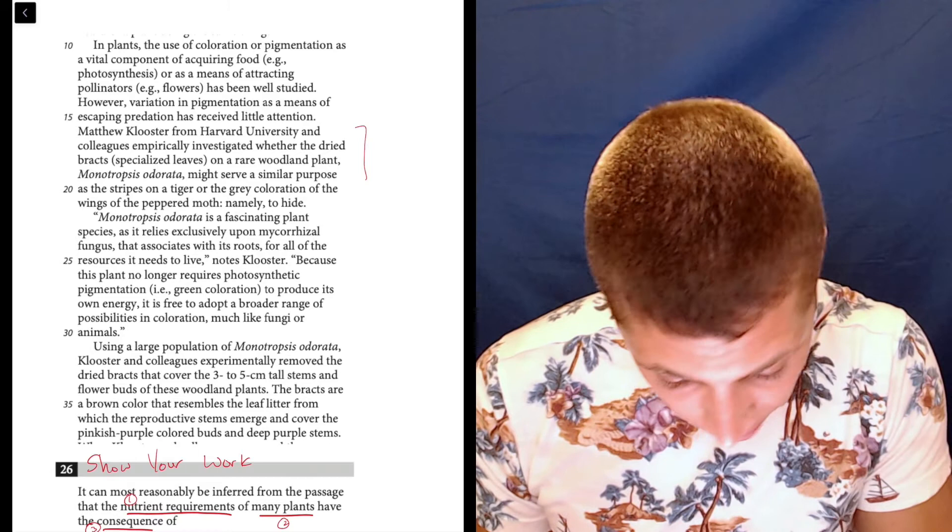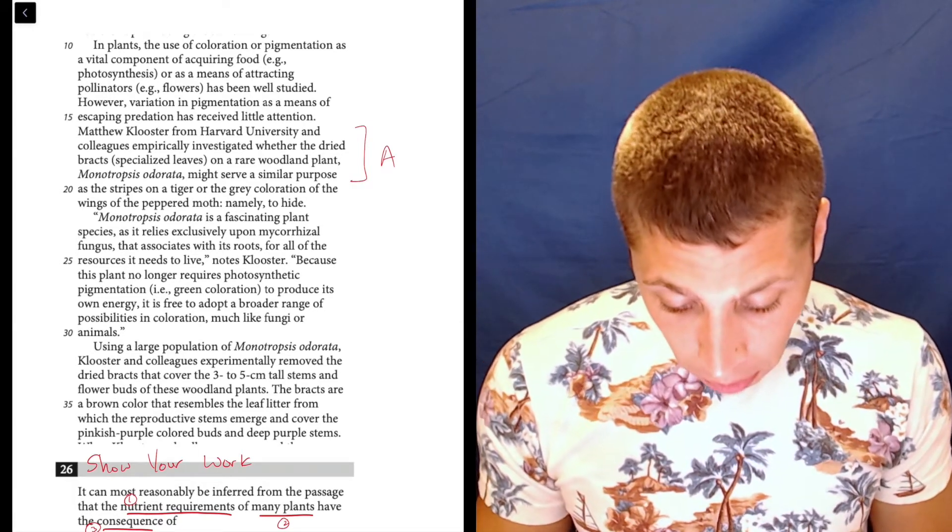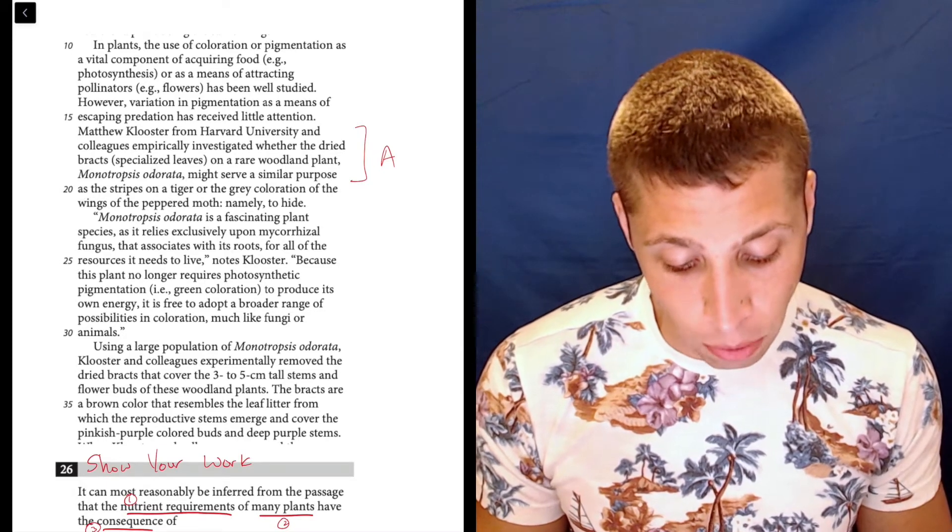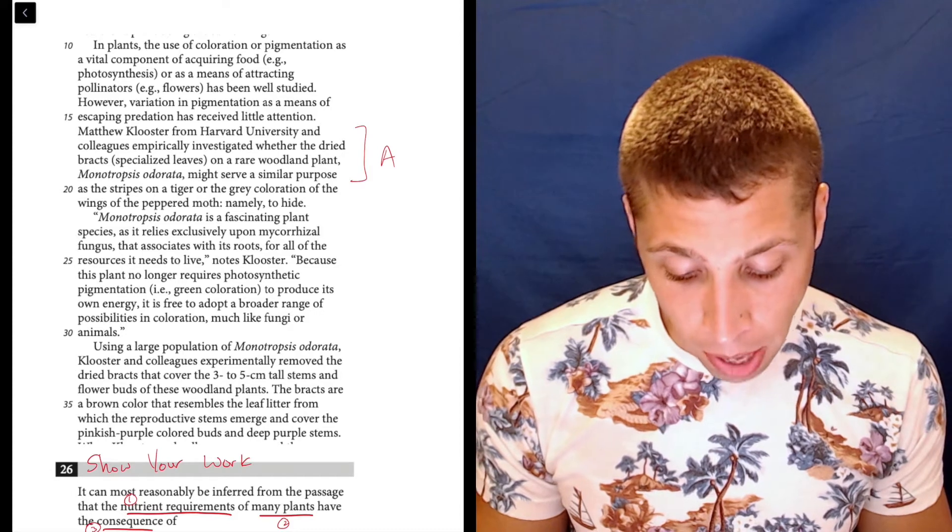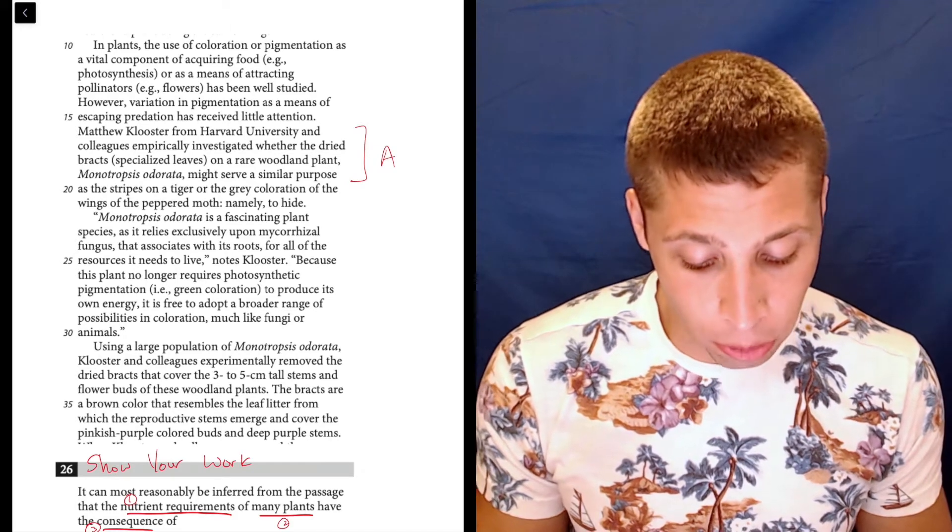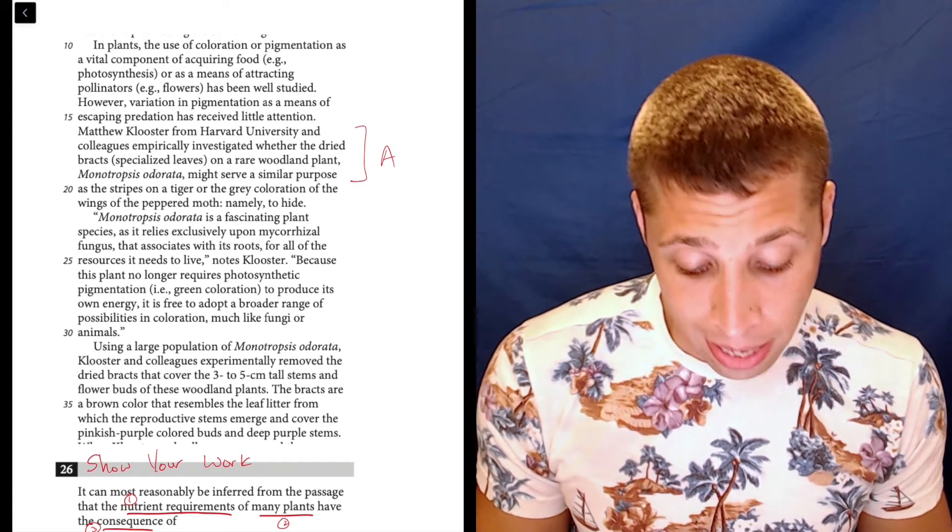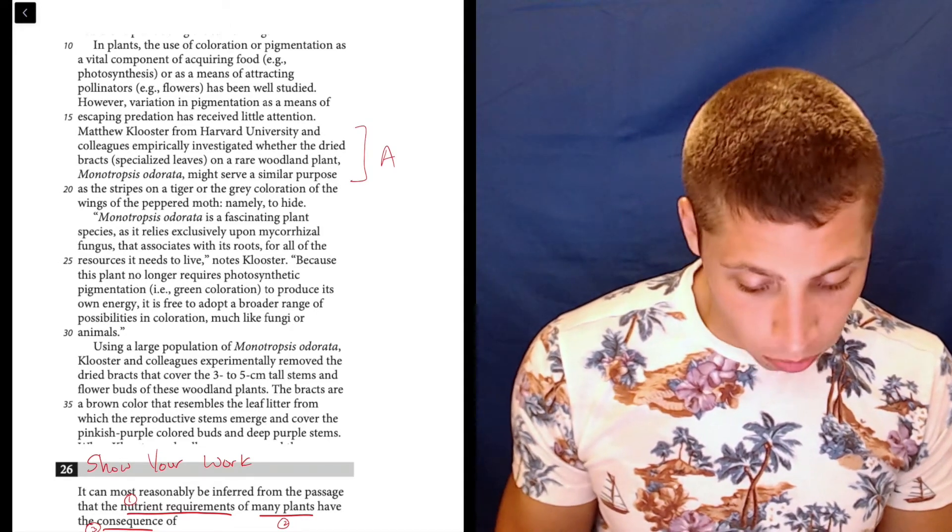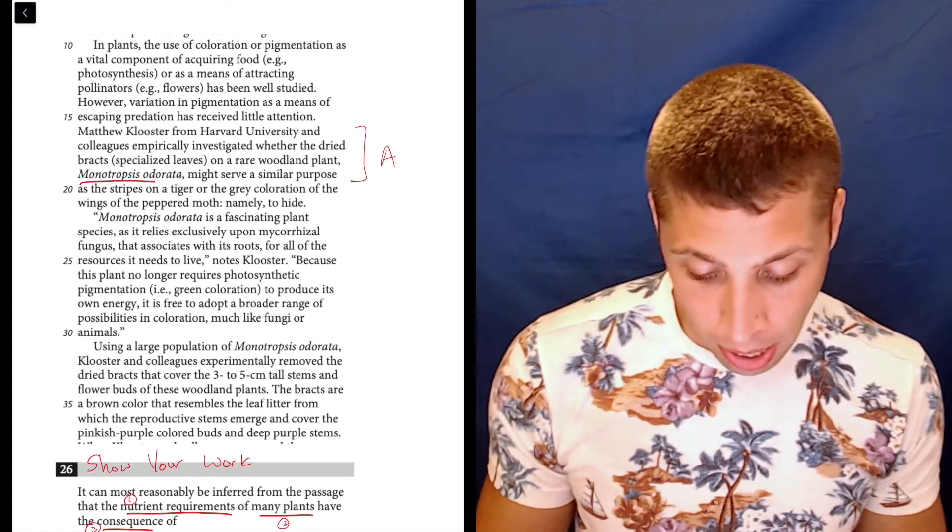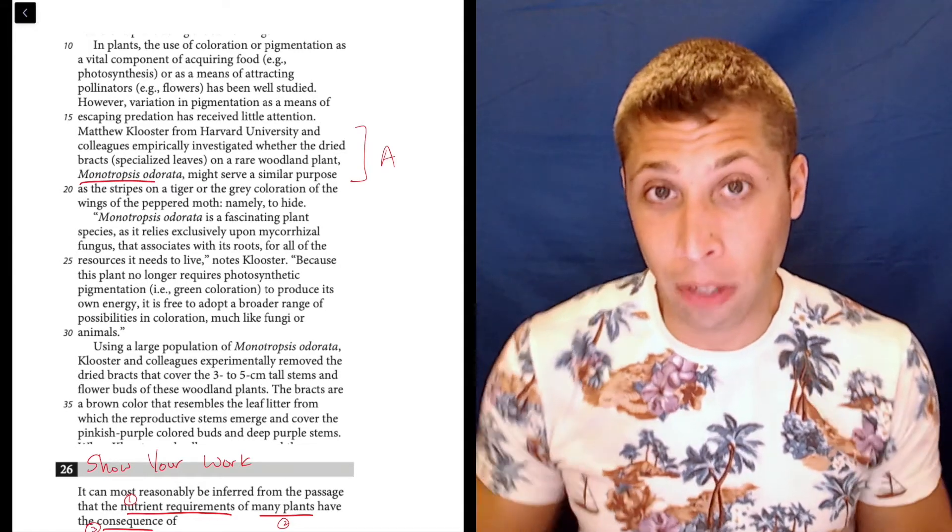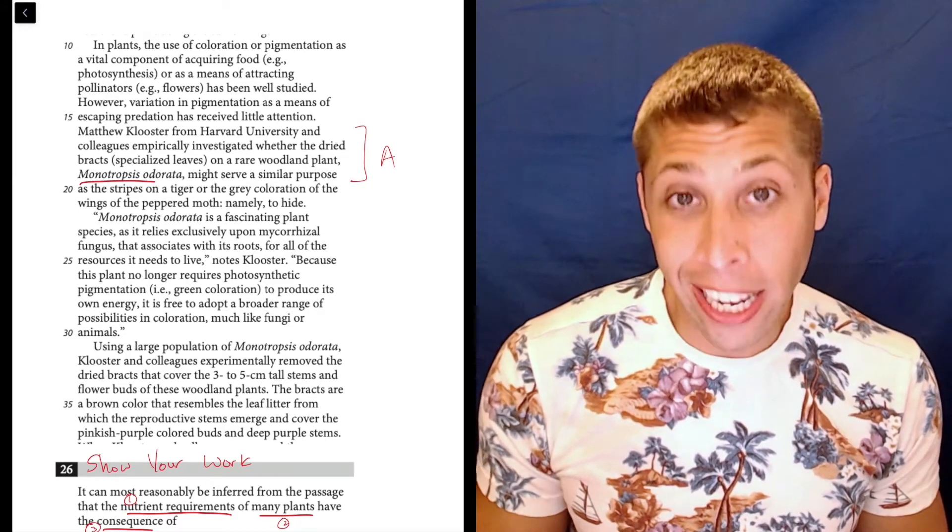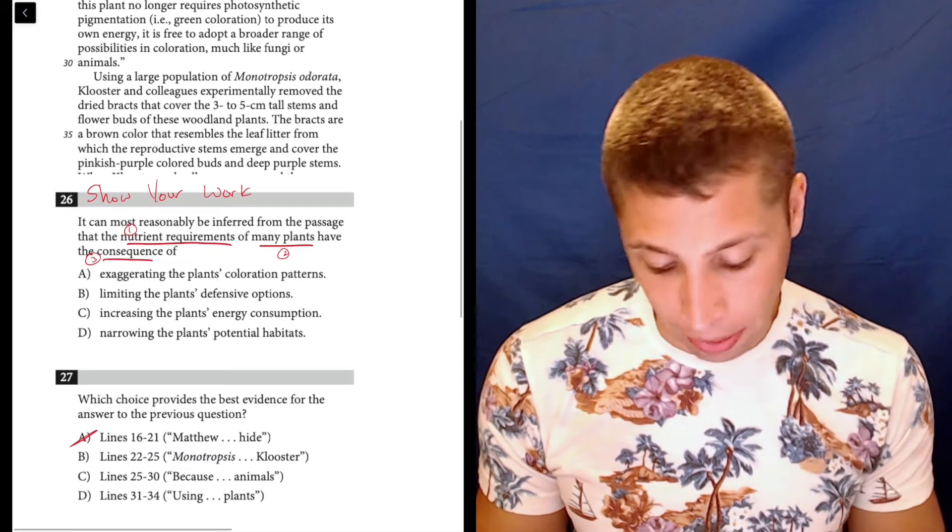Lines 16 to 21, that's right here. Matthew Klooster from Harvard University and colleagues empirically investigated whether the dried bracts, specialized leaves on a rare woodland plant, Monotropsis odorata, might serve a similar purpose as the stripes on a tiger or the gray coloration of the wings of the peppered moth, namely to hide. So I don't really see any nutrient requirements. They're not really talking about many different plants, they're talking about one particular plant here. This feels like they're just kind of introducing what the topic is. But let's keep going.